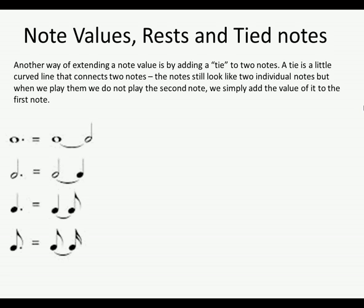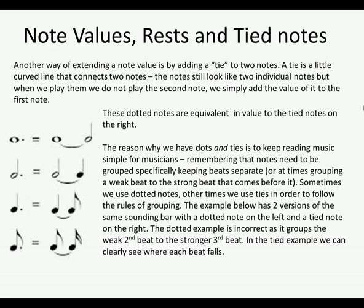The dotted minim would be equal to the minim tied to the crotchet. The dotted crotchet would be equal to the crotchet tied to the quaver. The dotted quaver would be equal to the quaver tied to the semi-quaver. So these dotted notes are equivalent in value to the tied notes on the right.